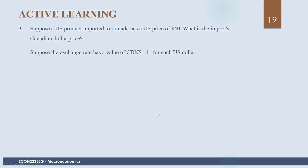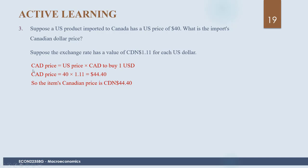Next question: Suppose a US product imported to Canada has a US price of $40. What is the Canadian dollar price? Suppose the exchange rate is Canadian $1.10 for each US dollar — meaning one US dollar equals $1.10 Canadian. Since the Canadian dollar is worth less than the US dollar, we need more Canadian dollars. We multiply 40 × 1.10 = $44, so the item's Canadian price is $44.